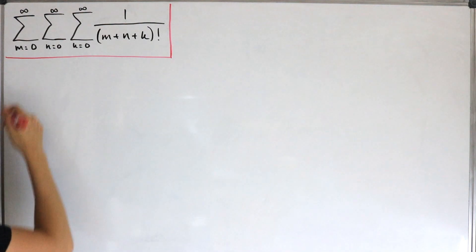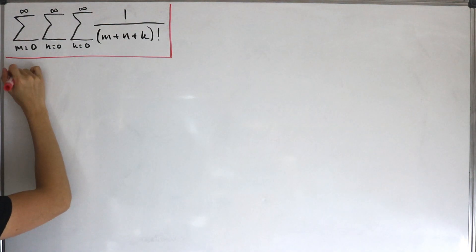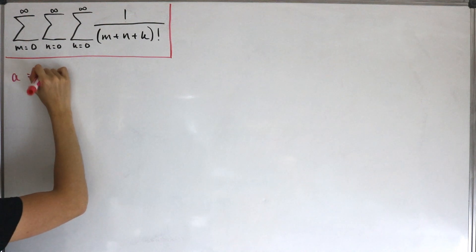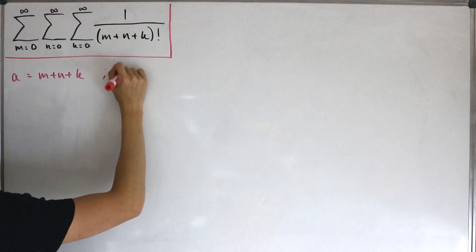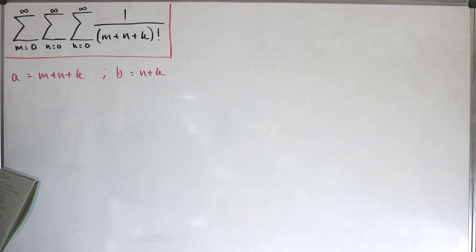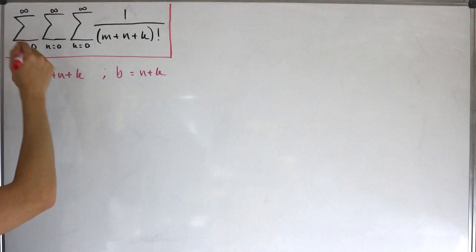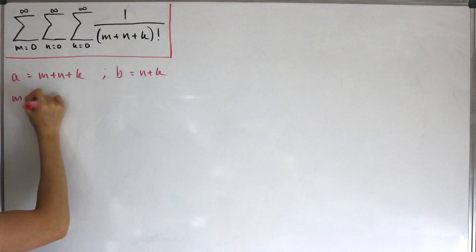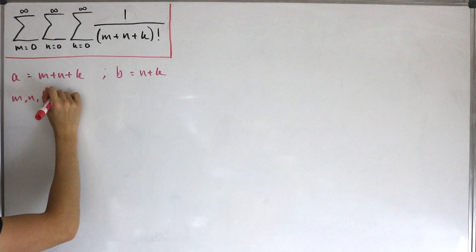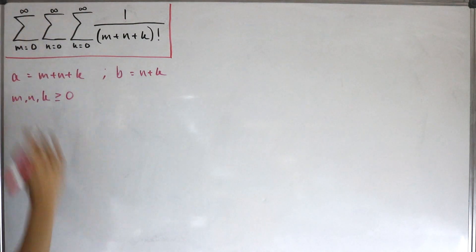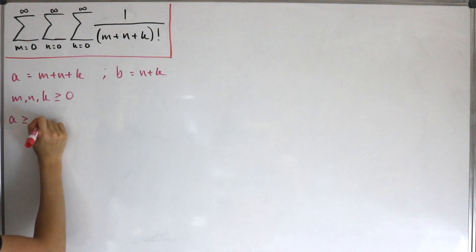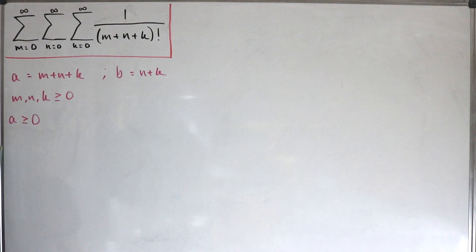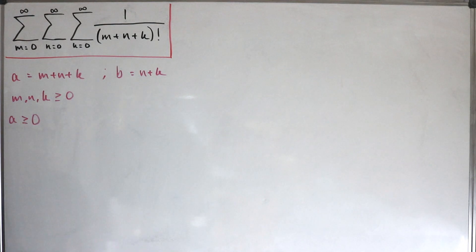Let's define the substitution: let a equal m plus n plus k, and then a second substitution, let b equal n plus k. Since m, n, and k are all greater than or equal to zero and range up to infinity, we can conclude that a is also going to be greater than or equal to zero.